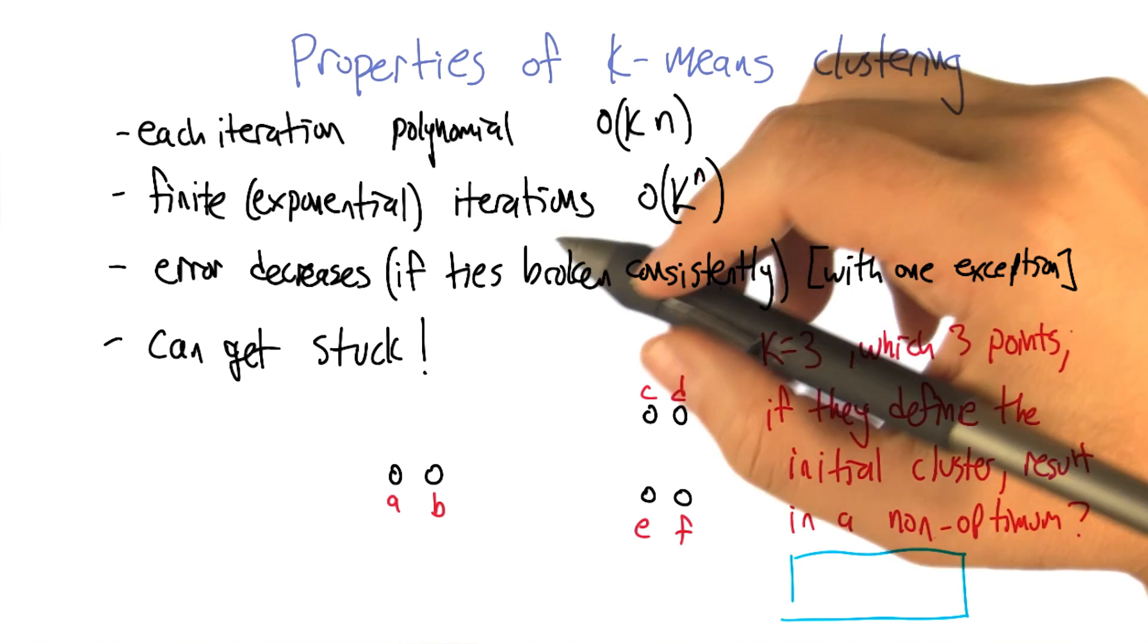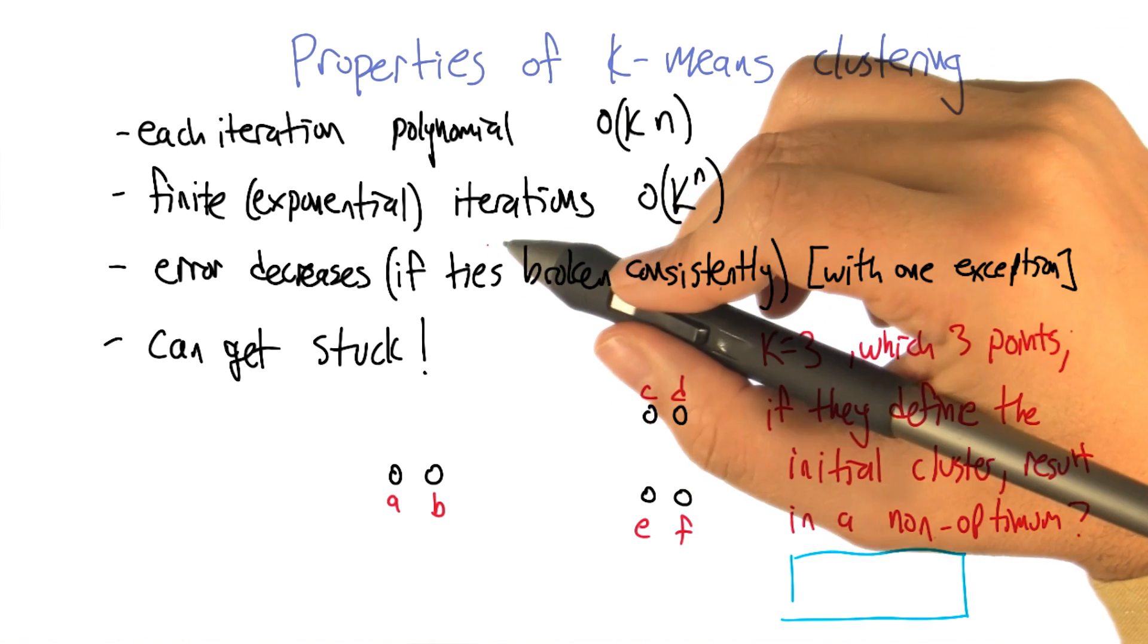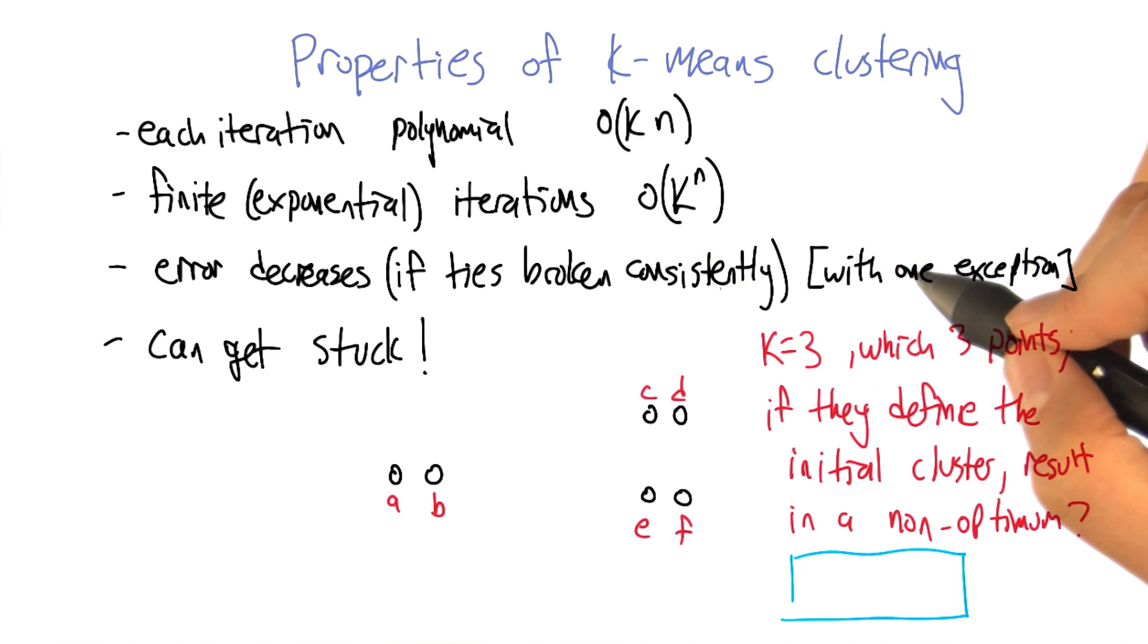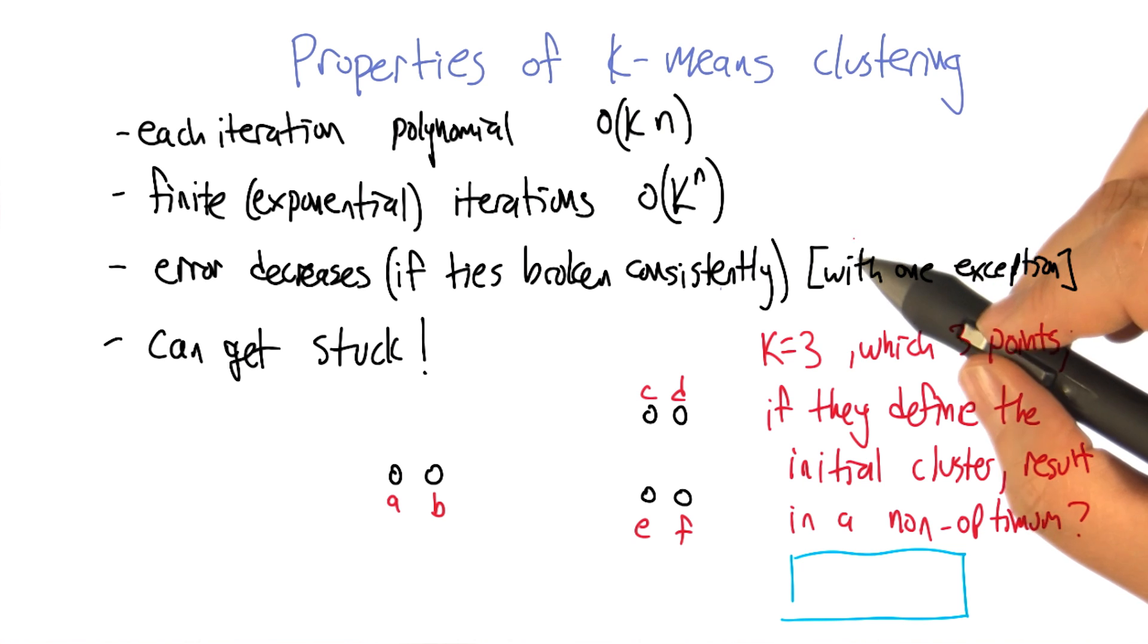And so the error on each iteration is going to decrease if we break ties consistently. And as you've been pointing out to me, there is one exception here, whereas if things are assigned to clusters, it could be that things don't improve, that it stays exactly the same.